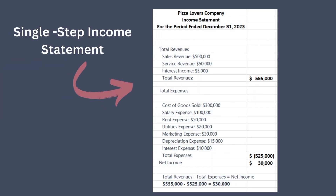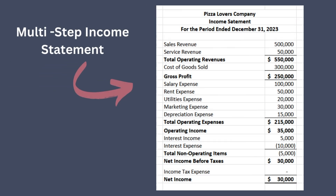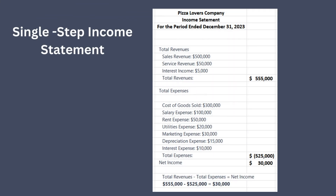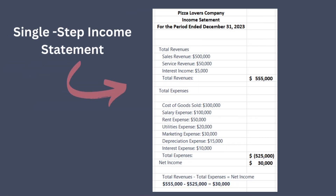The income statement can be formatted in either a single-step or multi-step format. The single-step format is a simple presentation where all revenues and gains are grouped together and all expenses and losses are grouped together. Net income is then calculated as the difference between total revenues and total expenses. In this single-step income statement, all revenues and gains are totaled under total revenues and all expenses and losses are totaled under total expenses, with net income derived by subtracting total expenses from total revenue.